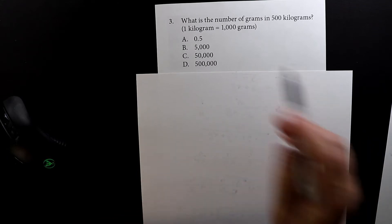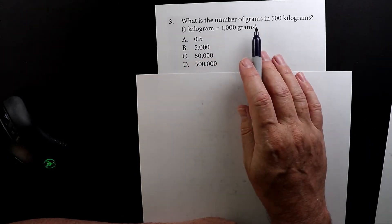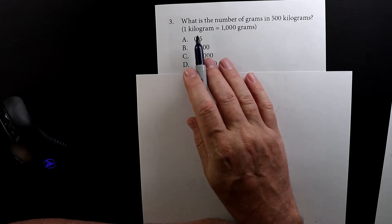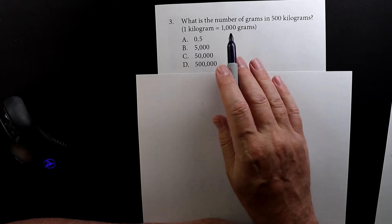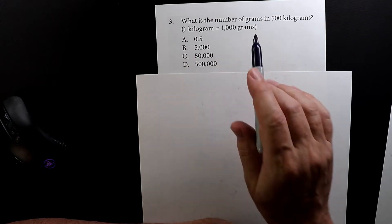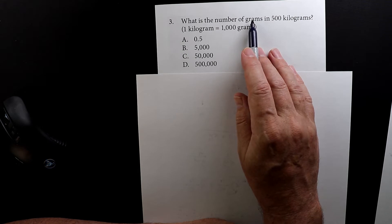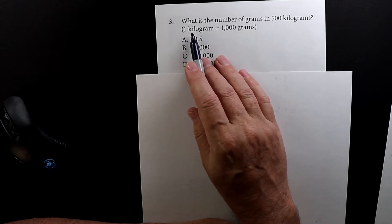So this is number three: What is the number of grams in 500 kilograms? And they tell you that a kilogram equals a thousand grams. So a thousand grams equals one kilogram.